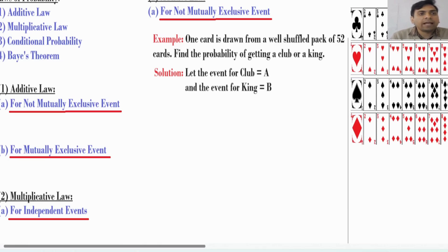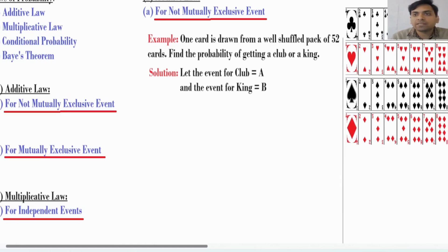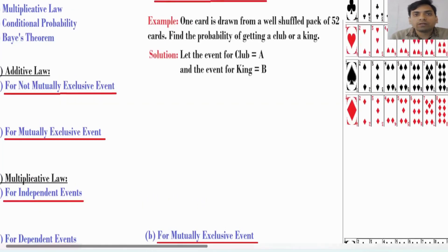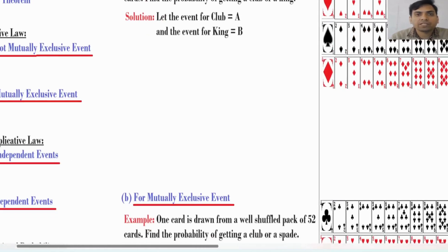First is additive law. In additive law there are 2 things: first is for not mutually exclusive events and second is for mutually exclusive events. For these two cases I have taken the same type of example.